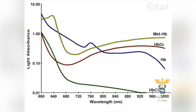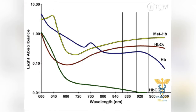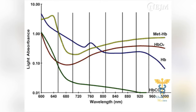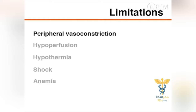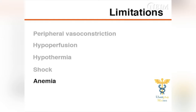Newer pulse oximeters are able to emit light at up to 8 different wavelengths. This increase in the number of available wavelengths makes it possible for the oximeter to distinguish carboxyhemoglobin and methemoglobin. There are additional limitations: peripheral vasoconstriction, hypoperfusion, hypothermia, shock, and anemia may also yield inaccurate results.